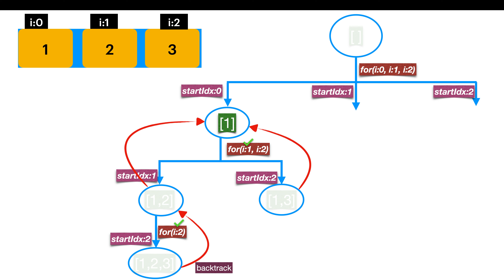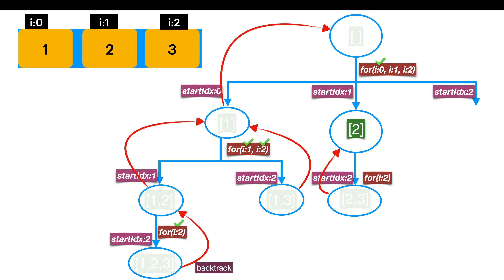From start index 1, we are done processing index 2, so we return to the caller, removing the last element to get subset [1]. From start index 0, we processed index 1, so let's move to index 2. We add index 2's value and the subset becomes [1,3]. We reached the end of the array, so we return to the caller by removing the last element, getting back to [1]. We processed index 2 from start index 0, so we return to the caller, removing the last element to get an empty subset.